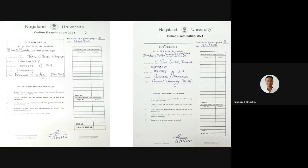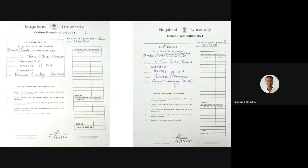For backlogs and repeaters — for example, if a third semester student is giving the first semester backlog — write 'BCom First Semester Backlog Examination 2021'. The remaining fields are the same: college name, roll number, registration number, subject, paper name, paper code. The total number of answer pages excludes the front page. Give your signature with date at the bottom.